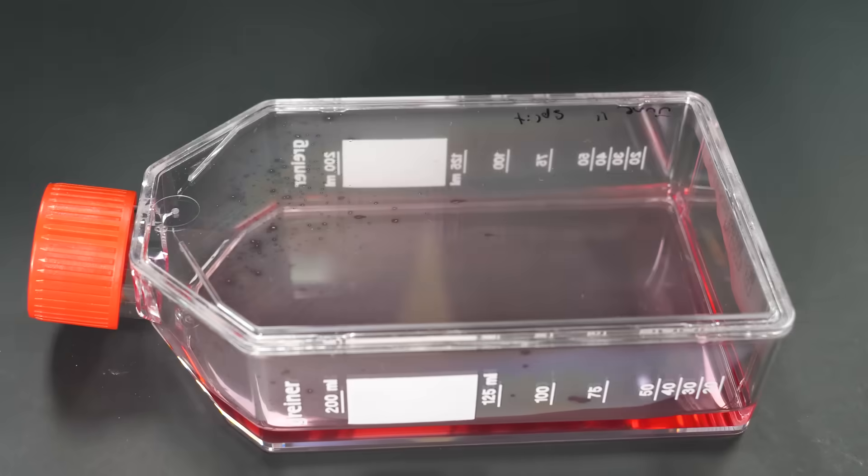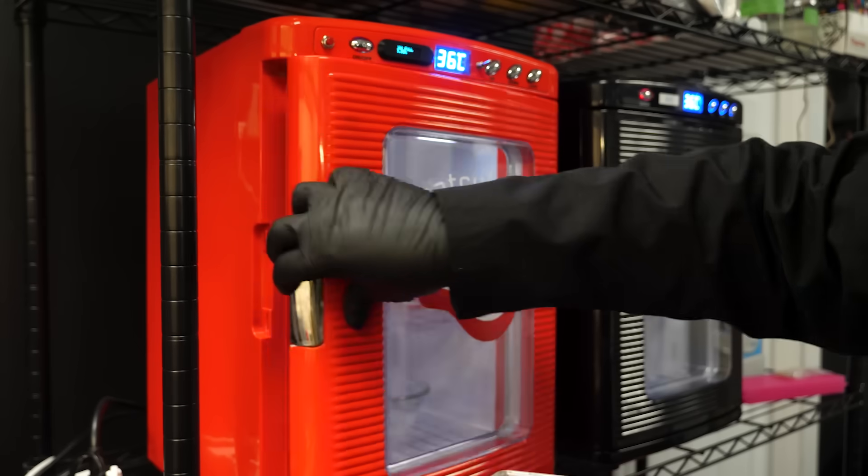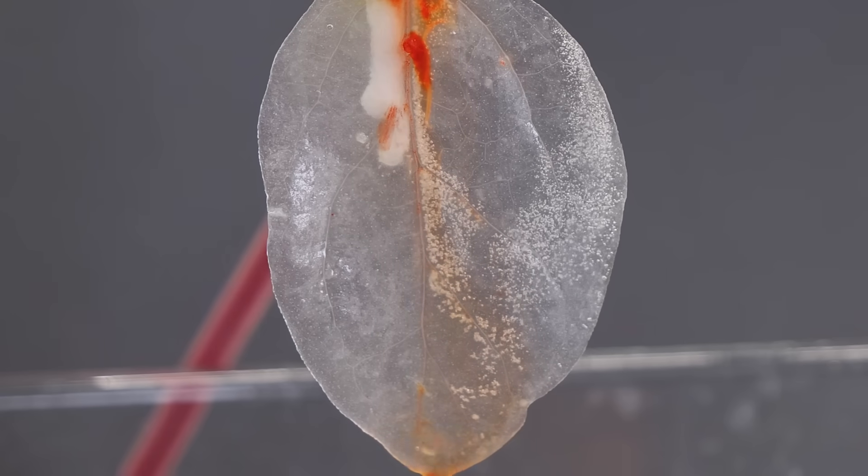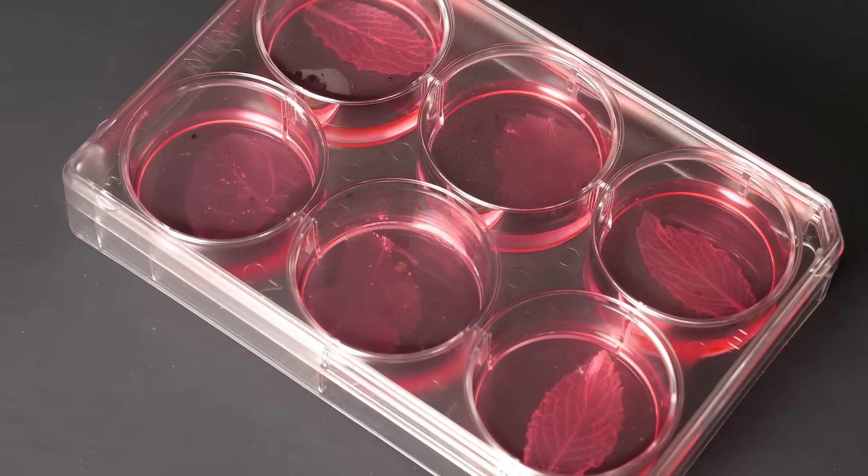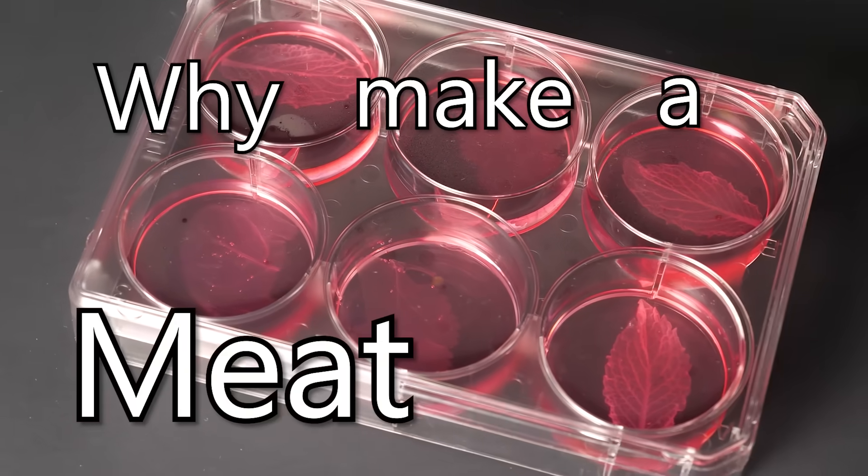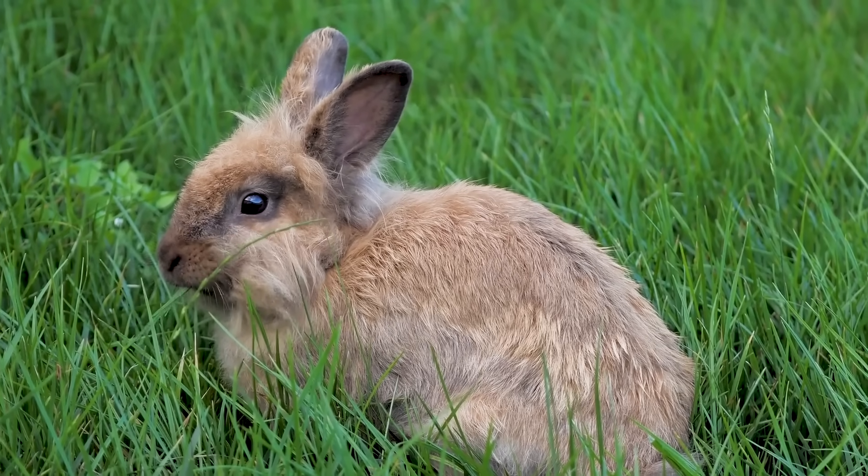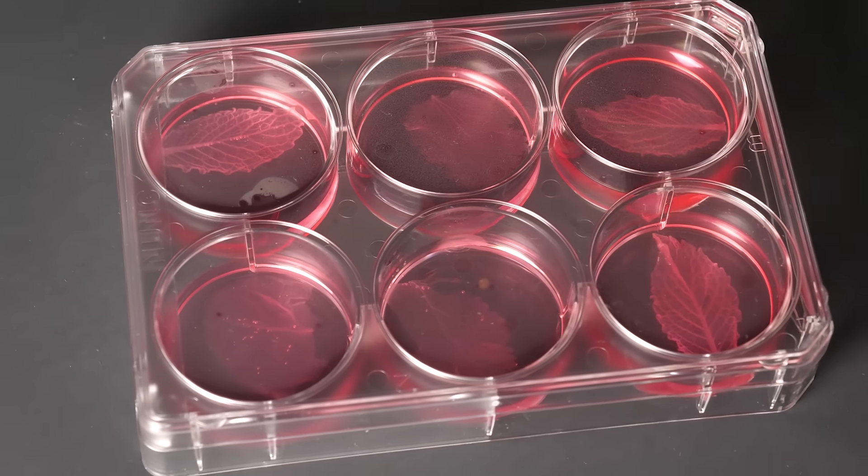Inside this flask is living rat cells that we grew in our meat-cubator that are ready to turn this ghostly scaffold into living meat. Now, you might be asking at this point, why are we doing this? Why make a meat leaf? Well, it's not to piss off the vegans by making a 100% meat-based salad, though I suppose you could do that.